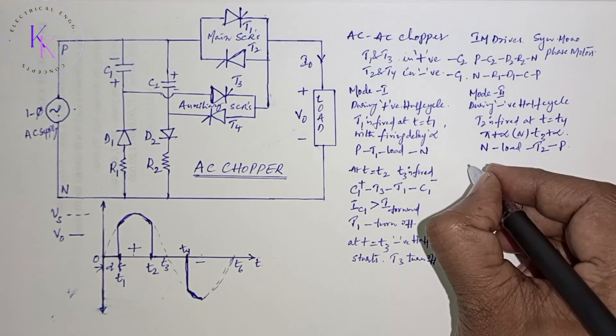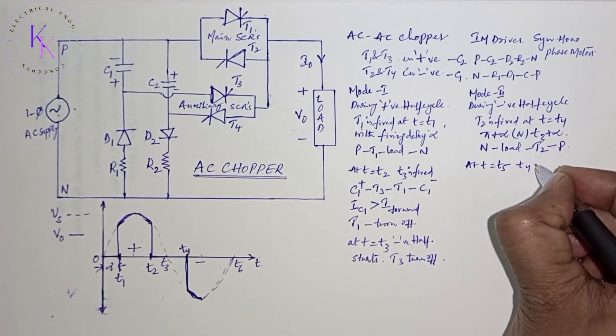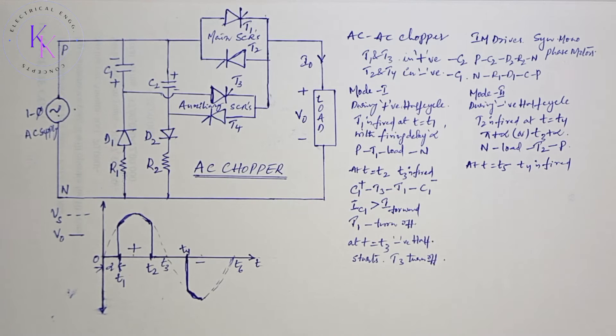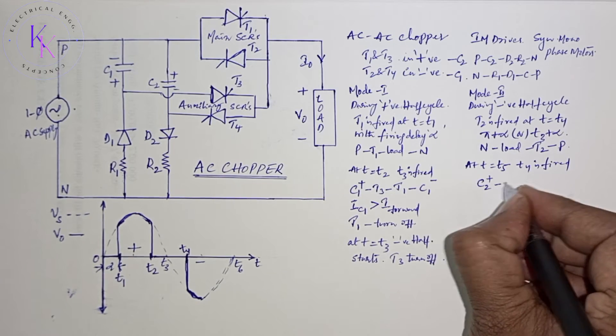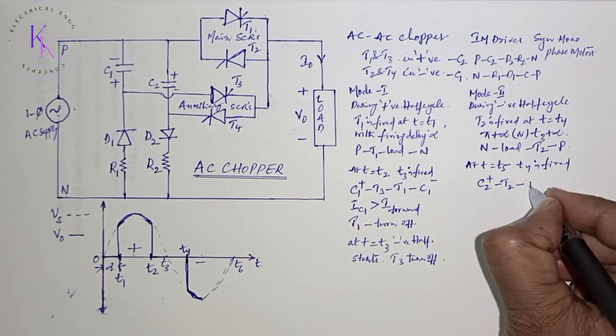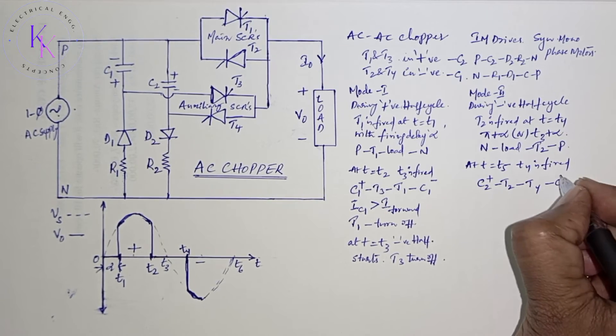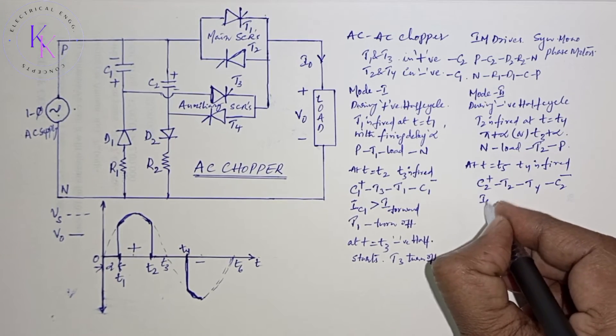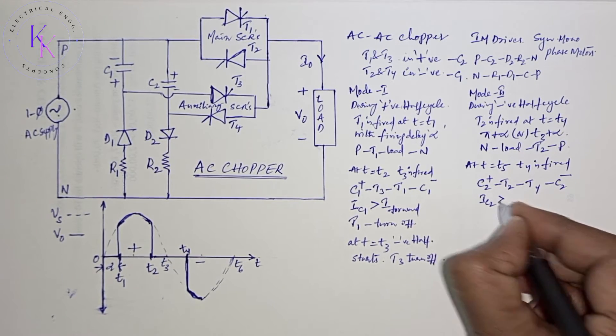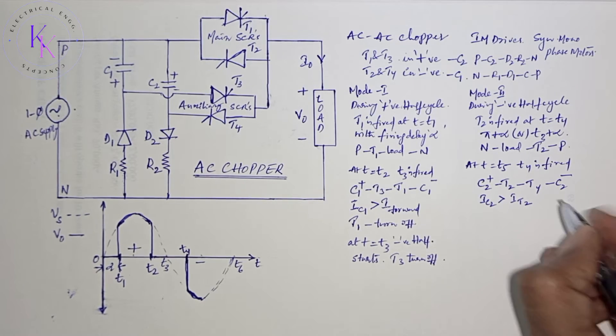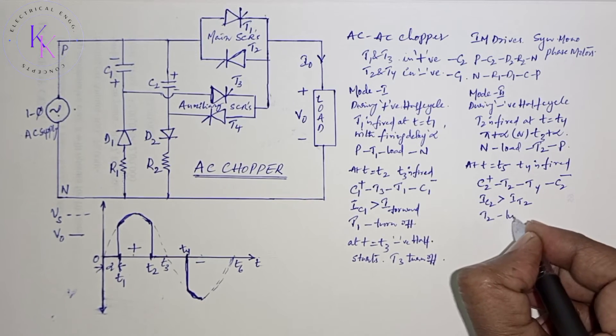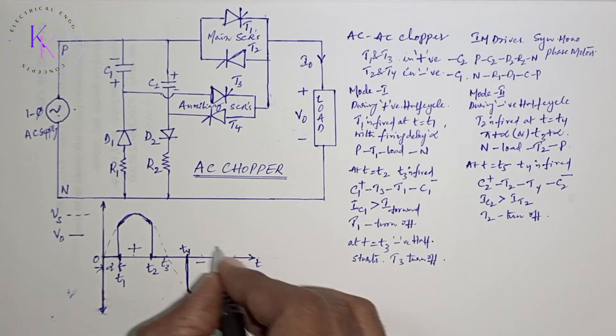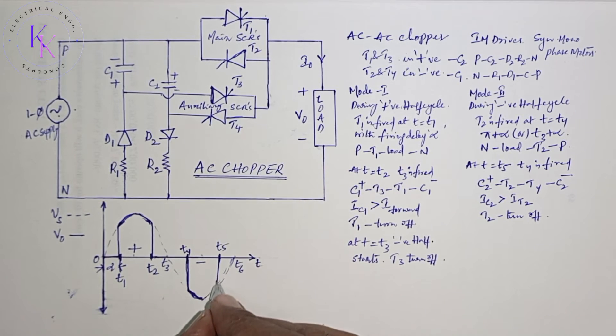At T equals to T5, T4 is fired. Then C2 discharges through T4 - C2 plus, T2, T4, C2 minus. When the current IC2 is more than the current flowing through the load, T2 turns off at T5. Output voltage will become zero.